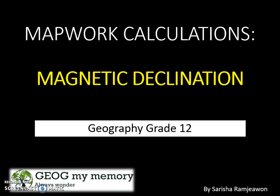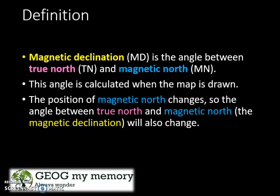This video looks at map work calculations, more specifically magnetic declination for Grade 12 Geography. Magnetic declination is the angle between true north and magnetic north. This angle is calculated when the topographical map is drawn.